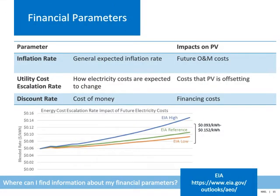Finally, financial parameters impact the long-term cost-effectiveness of PV. The inflation rate impacts future O&M costs. The utility cost escalation rate impacts the future cost of energy that the PV system is offsetting. And the discount rate impacts the financing cost of the project. A site's rate of 6 cents per kilowatt hour today is projected to increase to somewhere between 9 and 15 cents per kilowatt hour over the next 25 years, depending on the utility cost escalation rate used. EIA is a good resource for utility cost escalation rate information.